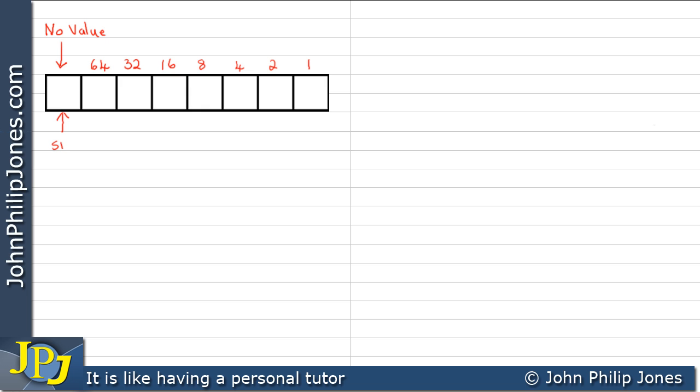However, this position has no value. This is reserved for the sign bit. And if there's zero here, it means it's positive. If there's one here, it means it's negative. So to repeat, zero is positive in this position and a 1 in this position means the number is negative.